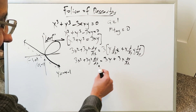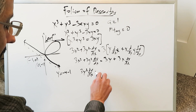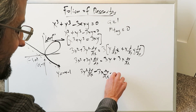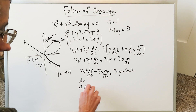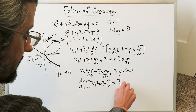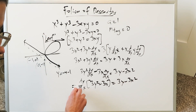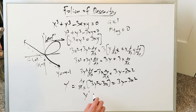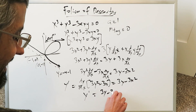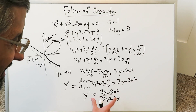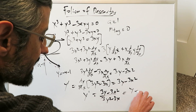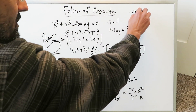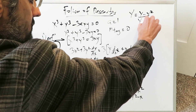Get all the dy/dx terms on one side: 3y squared dy/dx minus 3x dy/dx equals 3y minus 3x squared. Isolating dy/dx gives 3y squared minus 3x times dy/dx equals 3y minus 3x squared. Solving for dy/dx, which is synonymous with the derivative, gives dy/dx equals (3y minus 3x squared) over (3y squared minus 3x). You can cancel the threes, leaving dy/dx equals (y minus x squared) over (y squared minus x). This is your implicitly derived derivative.